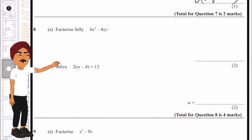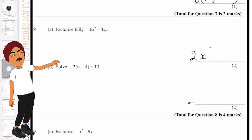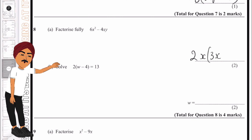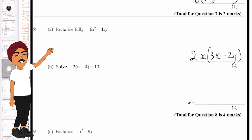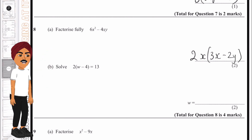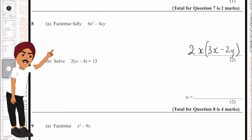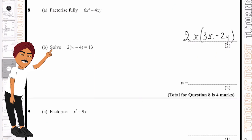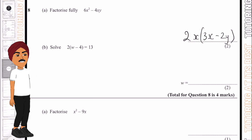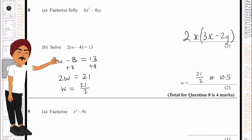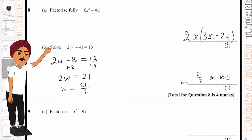For question 8a, 2x is common between both terms, so we multiply 2x by 3x to get 6x², and 2x by 2y to get 4xy, giving 2x(3x + 2y). For part b, we solve: expand to get 2w − 8 equals 13. Add 8 to both sides to get 2w equals 21. Then w equals 21 over 2, or 10.5.